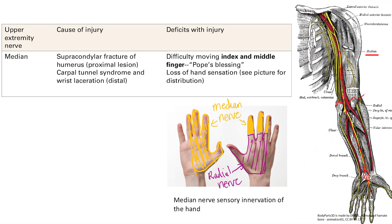The deficits with median nerve injury can be confusing. The simplified way to think about it: if you have difficulty moving your index or middle finger, it's probably a median nerve injury. You'll hear phrases like Pope's blessing and can get some clawing. For sensation, the median nerve covers the first three fingers and half of the fourth finger on the palmar side. Note that on the dorsum of the hand, the radial nerve takes up much of the space you'd expect the median nerve to cover.